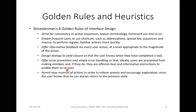The next golden rule is: permit easy reversal of action, in order to relieve anxiety and encourage exploration, since the user knows they can always return to the previous state. A great example is Control+Z (Undo). If you have done something wrong by mistake, you can immediately undo it using Control+Z. That undo or Control+Z is nothing but a reversal of action. There should be a proper mechanism for every reversal of action — this is an important point to consider when designing any interface.